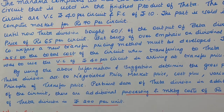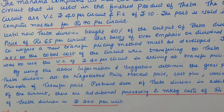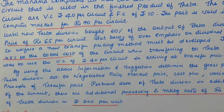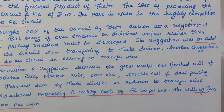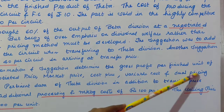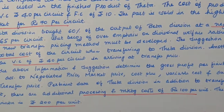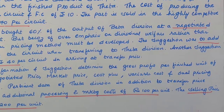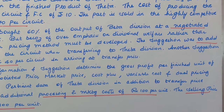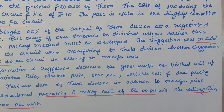Under cost plus pricing, the transfer price is fixed on the basis of total cost plus a desired rate of return. Under variable cost pricing, the transfer price is generally equal to the variable cost of the product. Dual pricing is a method of charging two prices: the selling company's transfer price equals total cost plus desired rate of return, whereas the buying company's transfer price equals the variable cost.